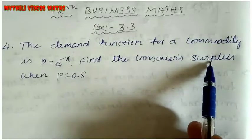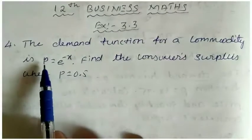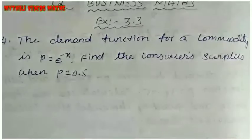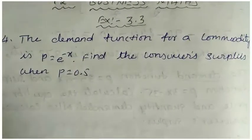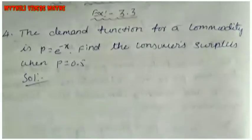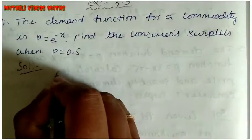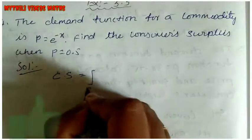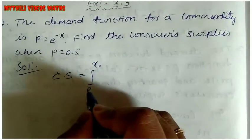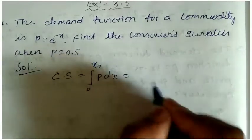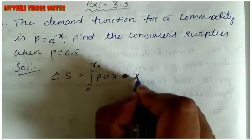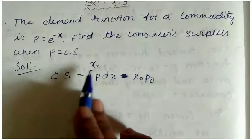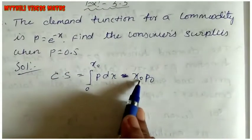Consumer surplus is given by a formula. The formula is: CS = integration of 0 to x₀ of p dx, minus x₀ into p₀. So consumer surplus equals integration from 0 to x₀ of p dx minus x₀ into p₀.